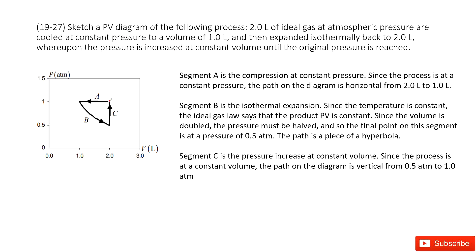First, we find the pressure at 1 atm. The volume goes from 2 to 1, and because the pressure is constant, we plot segment A.